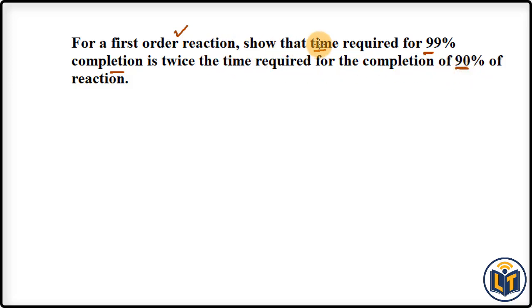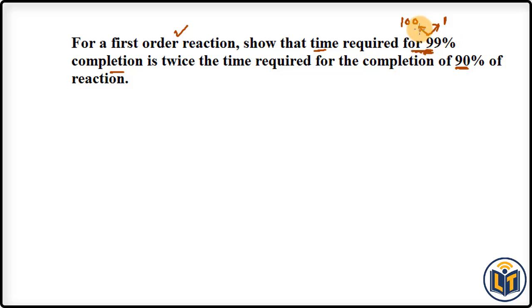Let me take the first reaction, which is getting completed by 99%. We can apply the formula for the first-order reaction. Since the reaction is 99% complete, the initial amount is 100 and the remaining amount is 100 minus 99, which equals 1.